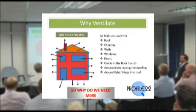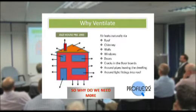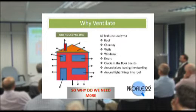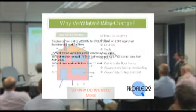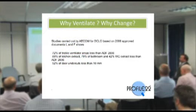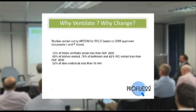Old houses obviously used to have chimneys, leaky roofs, leaky walls, leaky windows as well. That now is all being tightened up. This is just a quick overview of why we have had to make some significant changes to the 2006 regulations.